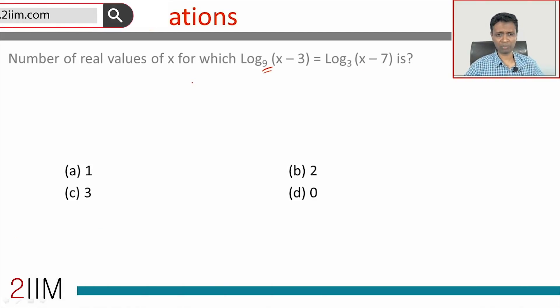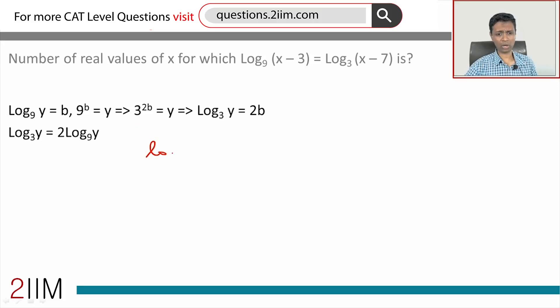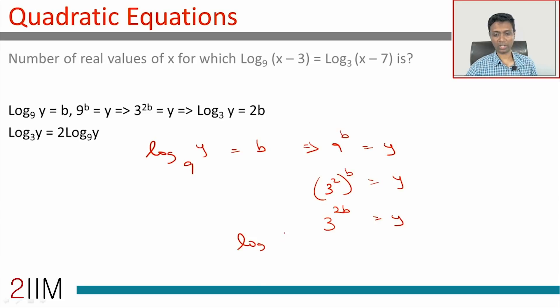Let's go step by step. Take the first idea: suppose we say log y to the base 9 equals b. It means 9^b = y, or (3²)^b = y, or 3^(2b) = y.